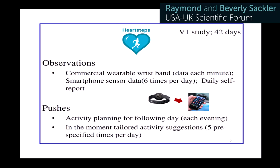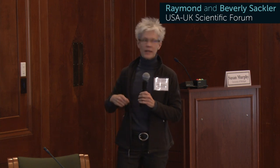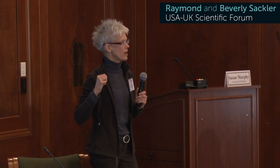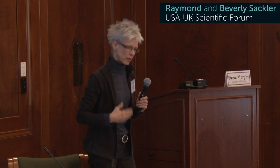This is the first of several studies, and this study is already finished. It had a wearable wristband — in this case it was a Jawbone. We collected sensor data off the phone only six times because of battery issues; we were using the user's own phone. There was also some daily self-report where we ask questions to the user. There were two types of push interventions at two different timescales: one activity planning prompt in the evening to plan activity for the next day, and an in-the-moment suggestion during the day about becoming more active. This study involved sedentary office workers, and it was in preparation for the next study, which involves people who had heart attacks.